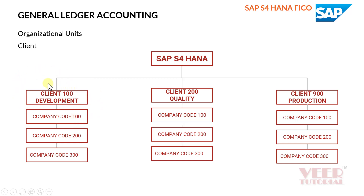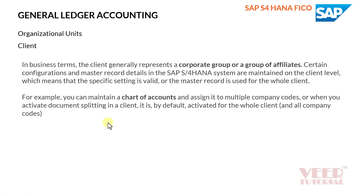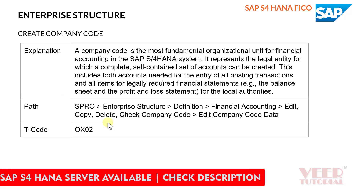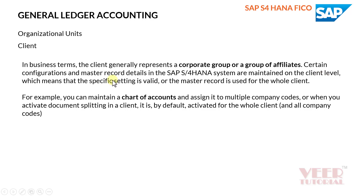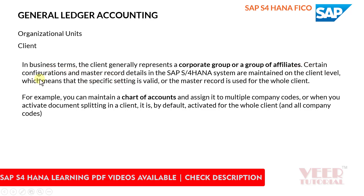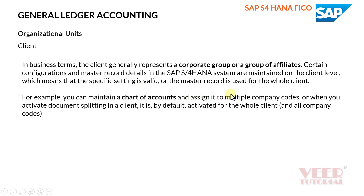For example, we create a chart of accounts at the client level, where we store all our general ledger records. This chart of accounts can be used across different company codes, but it is maintained at the client level. So certain configuration and master record details in SAP S4 HANA are maintained at the client level, meaning the specific setting is valid for the whole client.